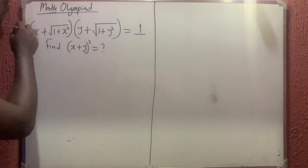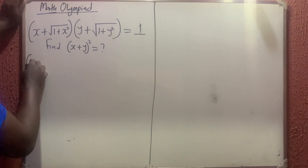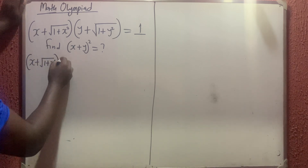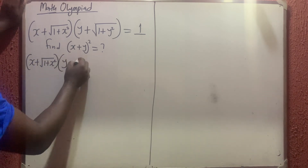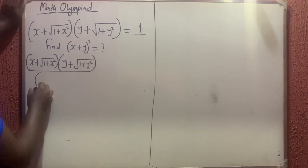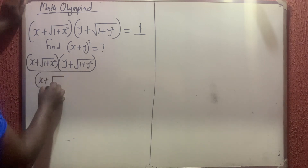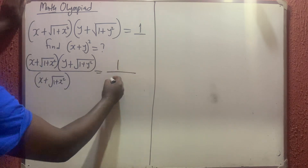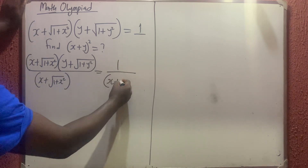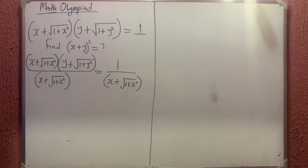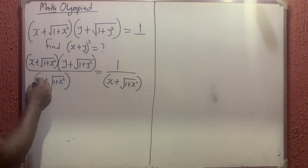If we divide both sides by this, we get x plus the square root of 1 plus x squared, times y plus the square root of 1 plus y squared, all over x plus the square root of 1 plus x squared, which equals 1 over x plus the square root of 1 plus x squared.